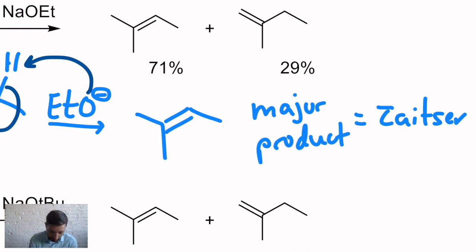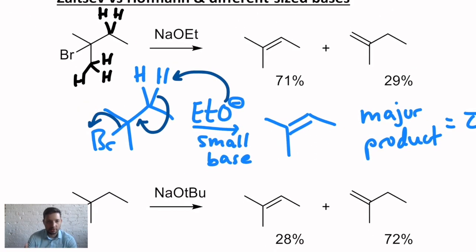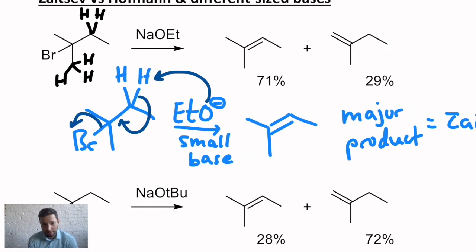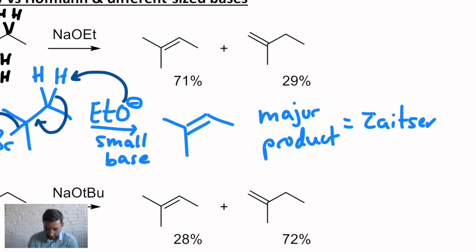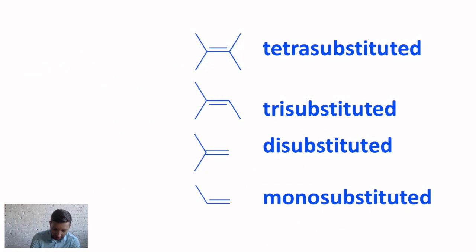The Zaitsev is when you have a small base, so ethoxide, methoxide, hydroxide, nothing that's too sterically crowded. And you'll take away an H from a position so that you have fewer Hs to pick from.